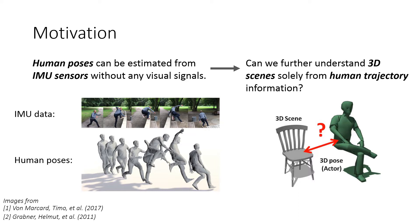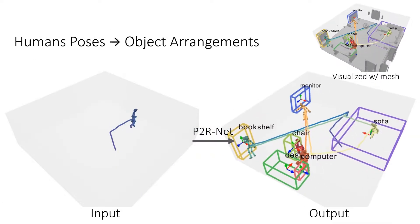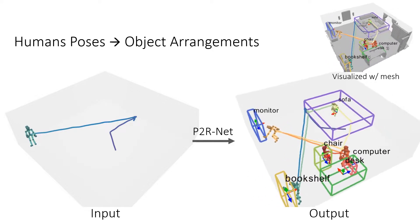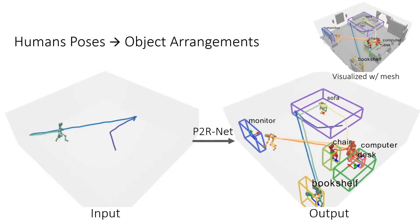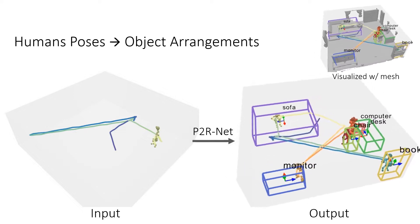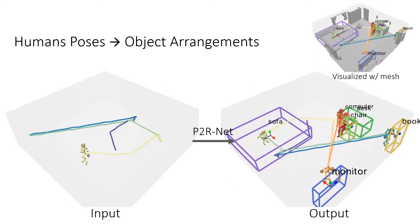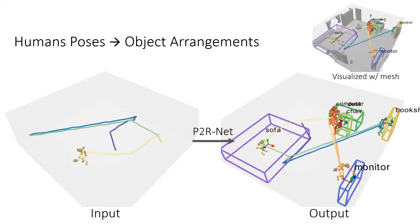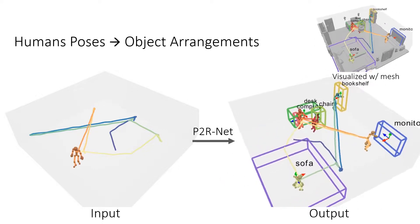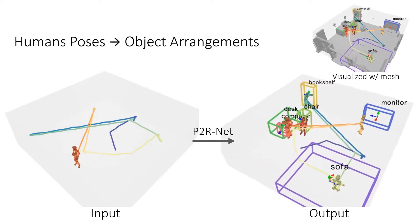For instance, a sitting motion indicates a high likelihood of a chair or sofa to support the sitting pose. To this end, we present Pose to Room Net, or P2R-Net. From only a sequence observation of 3D human poses without any visual input, we estimate the object arrangement in the scene of the objects that the person has interacted with. Each object in the scene is predicted as its object class category in a 3D-oriented bounding box.